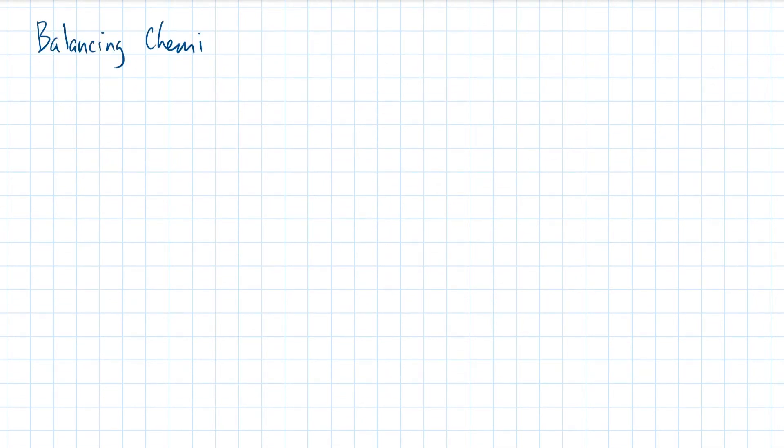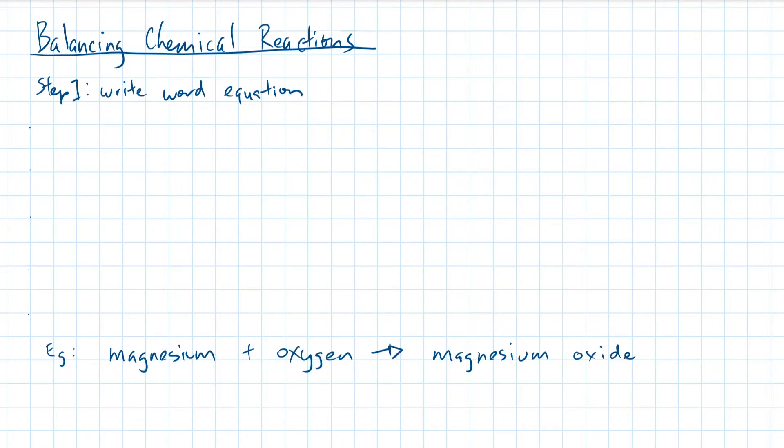Here are the basic steps in balancing chemical reactions. Step 1: Write the word equation of the reaction. We'll use the earlier example of magnesium reacting with oxygen. Step 2: Write the skeletal equation of the reaction. So write out the chemical symbols of each stable compound.